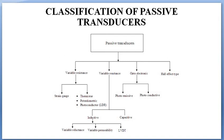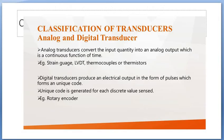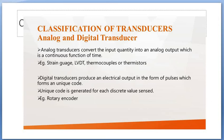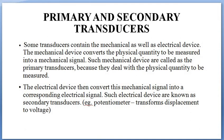The next classification is analog and digital transducers. An analog transducer converts the input quantity into an analog output which is a continuous function of time — a continuous series. Examples include strain gauges, LVDT, thermocouples, and thermistors. A digital transducer gives the output in the form of pulses which form a unique code generated for each discrete value sensed. An example is a rotary encoder.